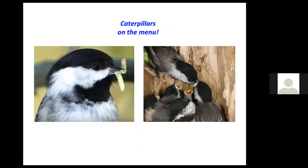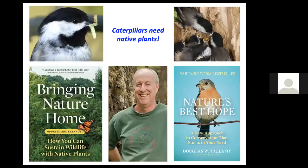A mama black-capped chickadee will need 6,000 to 9,000 caterpillars to fledge her chicks — they're hungry and need a lot of food. Doug Tallamy has written two books explaining how important it is to establish native plants to feed the caterpillars. Native plants are so important because non-native plants are essentially inedible to most caterpillars — they haven't had enough time to figure out how to digest the chemicals in those leaves. We really need to focus on establishing native vegetation to provide this vital resource to birds raising their chicks.